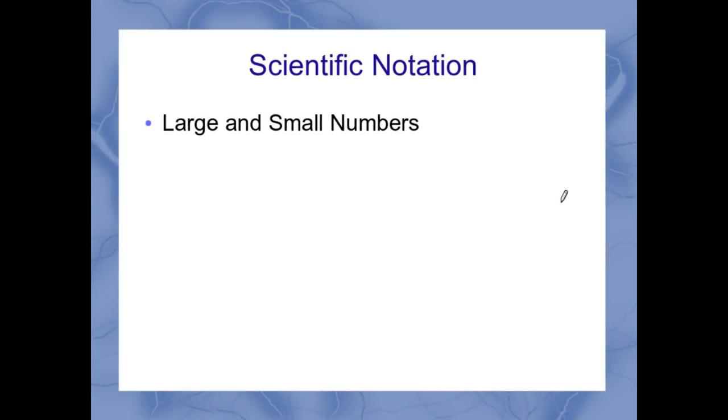The basis for scientific notation is that it's a way to represent really large and really small numbers. Here are a couple of examples. A positive exponent is for large numbers, a negative exponent is for small numbers. Remember that negative is small, positive is big.